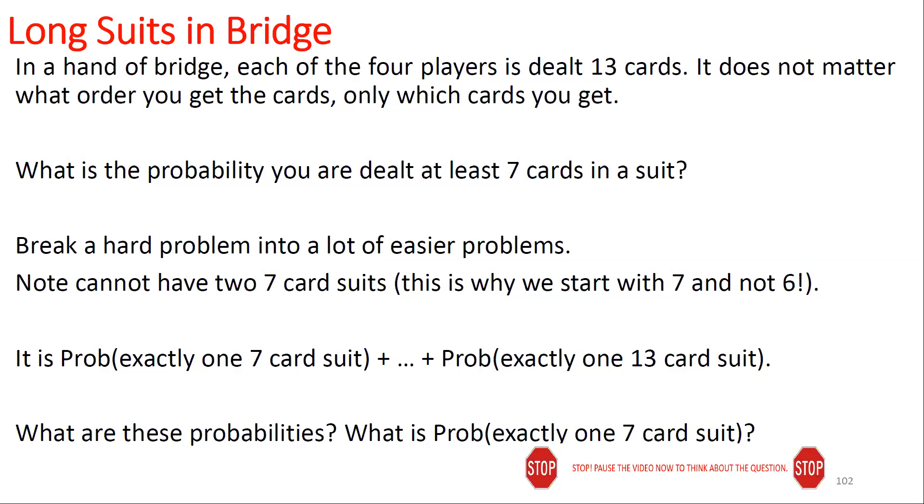So what we can do is figure out the probability you have exactly one 7-card suit, plus the probability you have exactly one 8-card suit, all the way up to the probability you have exactly one 13-card suit. The 13 is extremely rare. How many hands are there that have all cards in one suit? Only four. So what are these probabilities? What is the probability that you have exactly one 7-card suit?